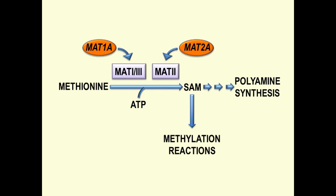SAM is involved in polyamine synthesis and is the major methyl donor. It is synthesized by the liver-specific methionine adenosyltransferase 1A and 3 isozymes, encoded by the MAT1A gene, and by the ubiquitous MAT2 enzyme, encoded by the MAT2A gene. In HCC, sharp MAT1A downregulation is associated with a rise in MAT2A expression.